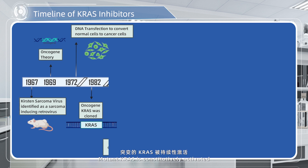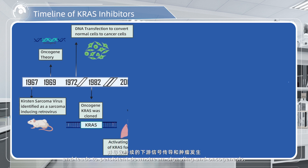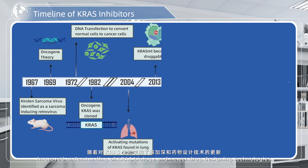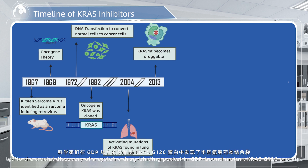Mutant KRAS is constitutively activated and leads to persistent downstream signaling and oncogenesis. In 2013, improved understanding of KRAS biology and newer drug-designing technologies led to the crucial discovery of a cysteine drug-binding pocket in GDP-bound mutant KRAS G12C protein.